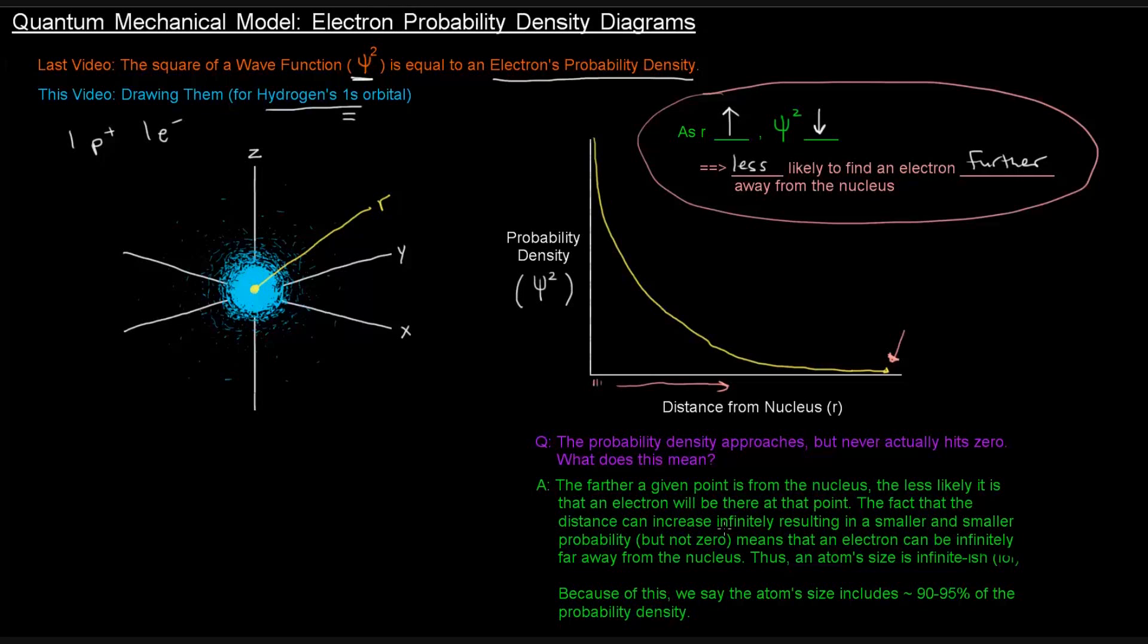The fact that the distance can increase infinitely, resulting in a smaller and smaller probability, but not a zero probability, means that an electron can be infinitely far away from the nucleus. That means an atom size is infinite-ish. I even put lol. It's pretty funny.